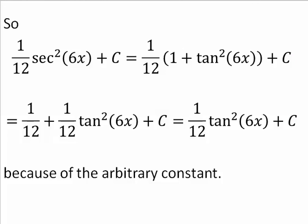So starting with secant squared, I make a substitution, and then after I make that substitution, I've got 1 over 12 plus an arbitrary constant. So you see on this bottom line, at the beginning of the bottom line, I have 1 over 12 plus 1 over 12 tangent squared plus c.